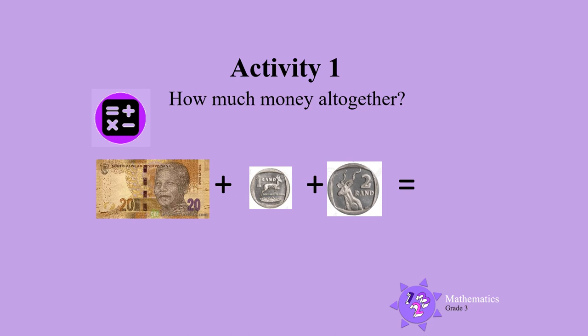Let's do one more. How much money altogether? We need to add again. So, 20 rand, add 1 rand, add 2 rand is...